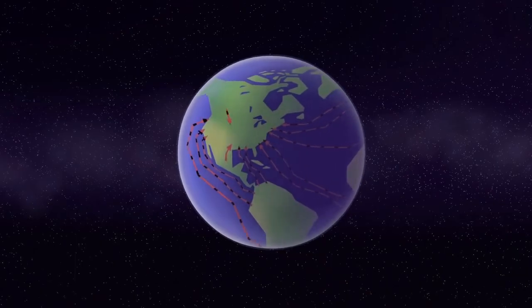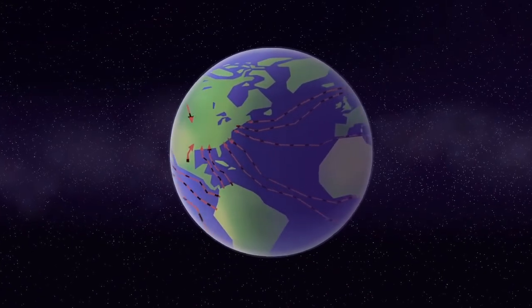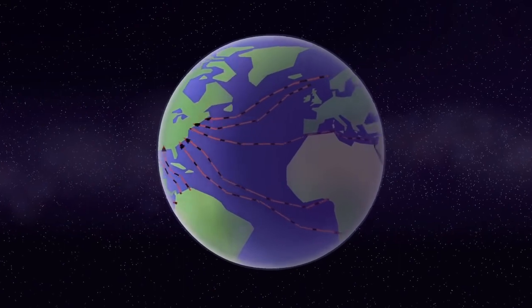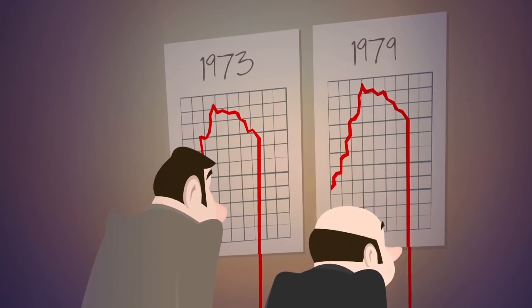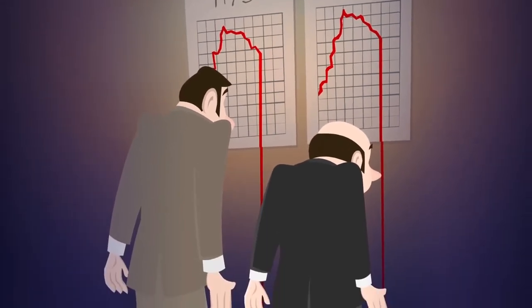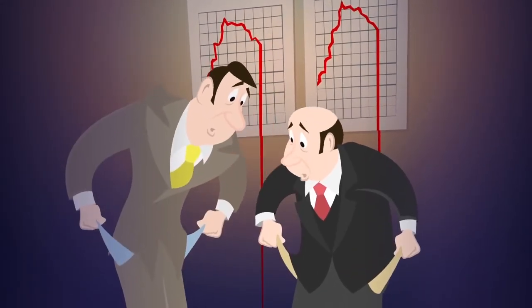From this point on, America would depend increasingly on imported oil. This made her vulnerable to supply disruptions and contributed to the economic mayhem of the 1973 and 1979 oil shocks.